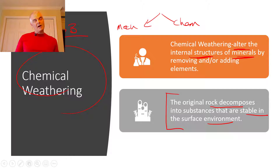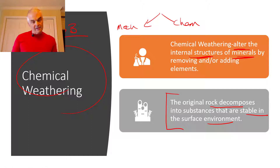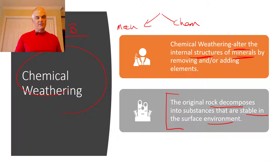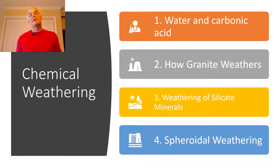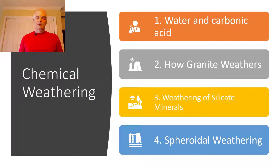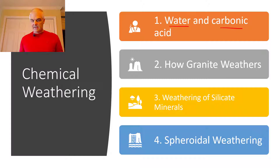Not all of the rock minerals are as stable as others, and that's what's going to happen as they're forming. When we talk about chemical weathering, there are four types we're going to talk about — there are a few more, but these are the big four. The first one has to do with water and carbonic acid and how granite weathers.